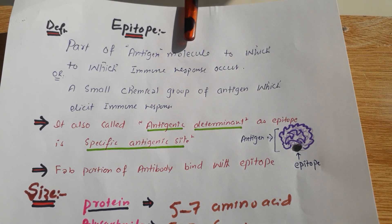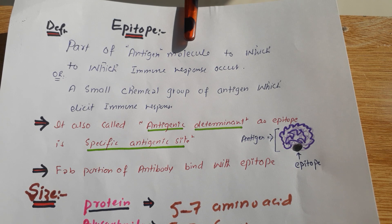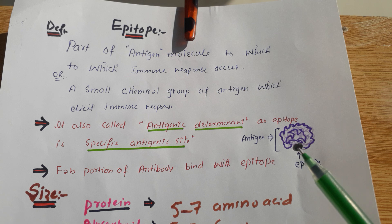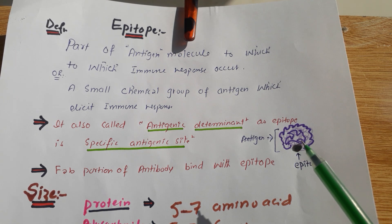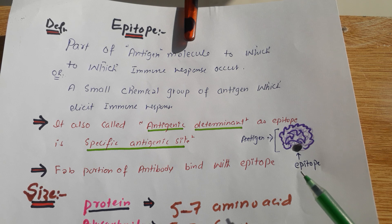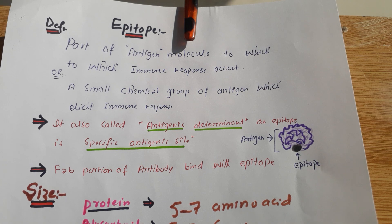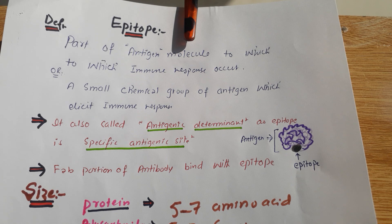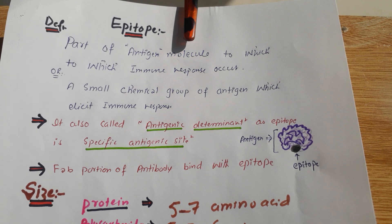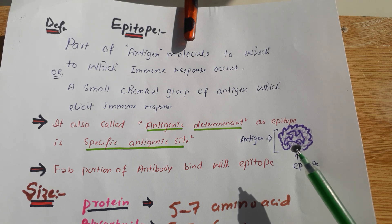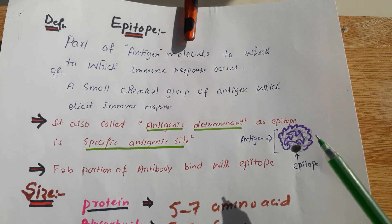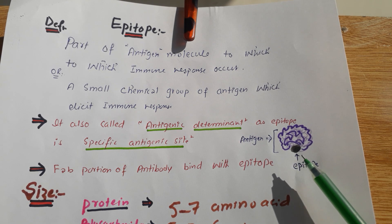Epitope is that part of an antigen molecule to which the immune response occurs, or simply that part of antigen which stimulates the immune response. Here you can see this whole is the antigen, and this part of the antigen which activates the immune system — or to which the immune system will react — is called epitope. It can also be called antigenic determinant, because this is the specific antigenic site of the whole antigen to which the immune response will occur.